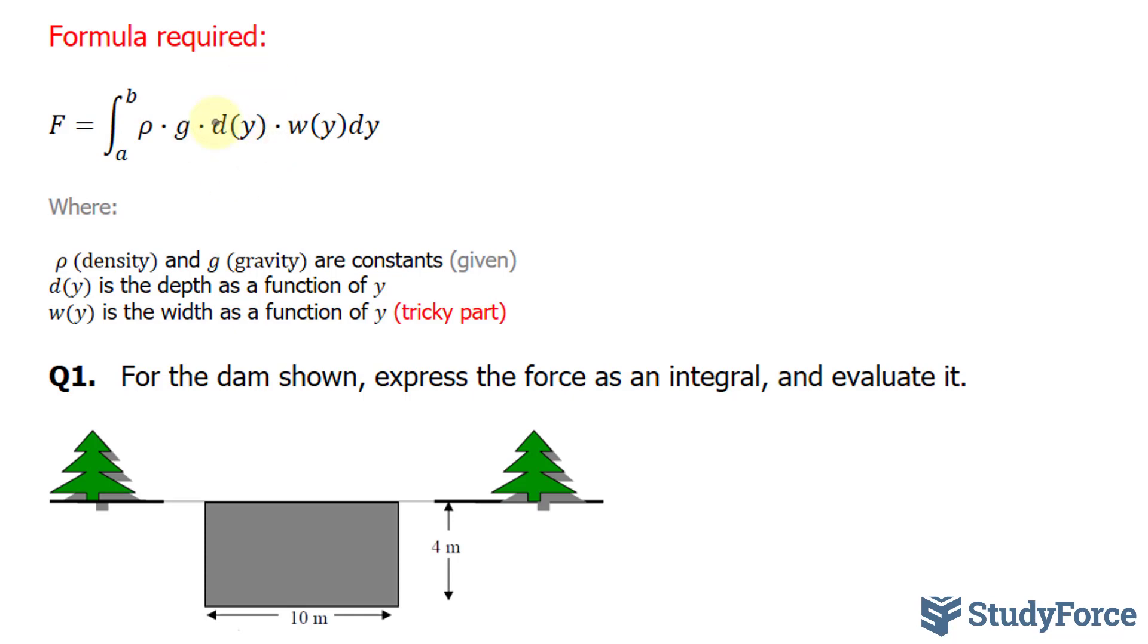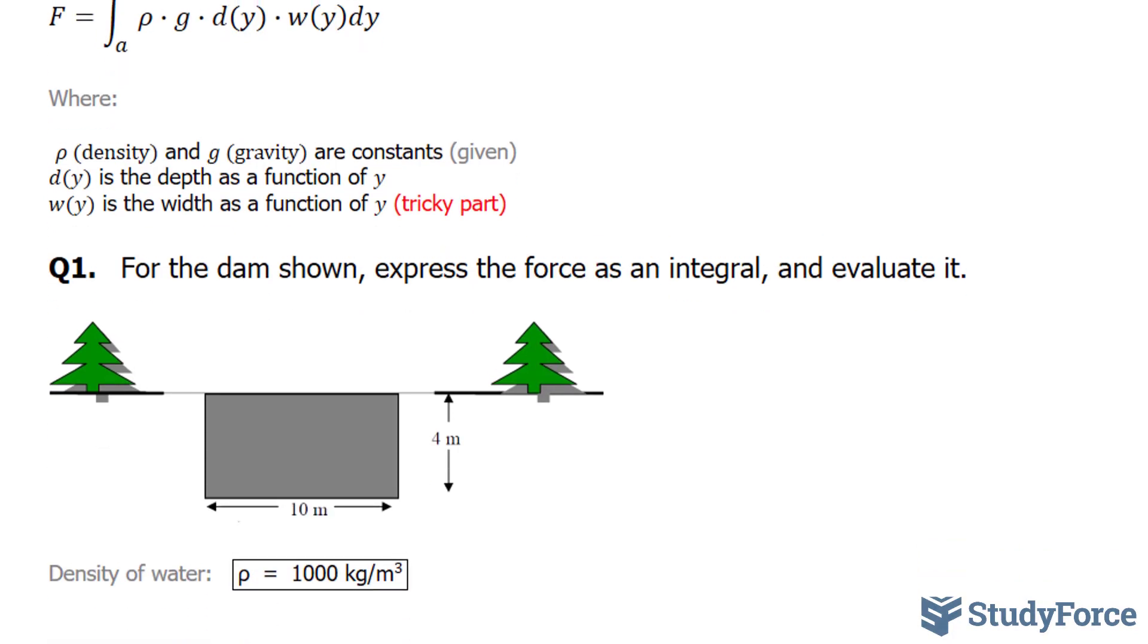d(y) represents the depth as a function of y, whereas w(y) is the width as a function of y. This is usually the tricky part when you have weird looking shapes. Luckily for us, that's not the case in question one. We have a square, so this one is easy.